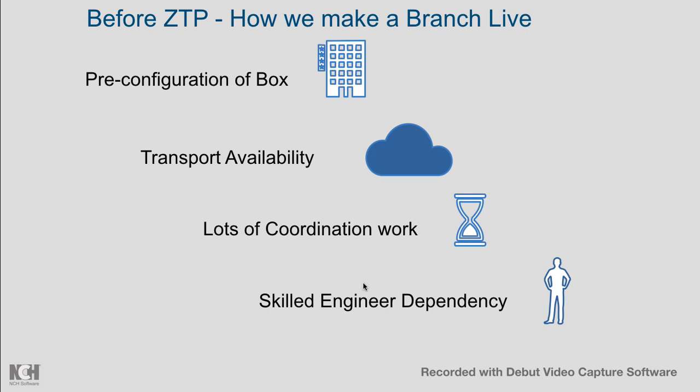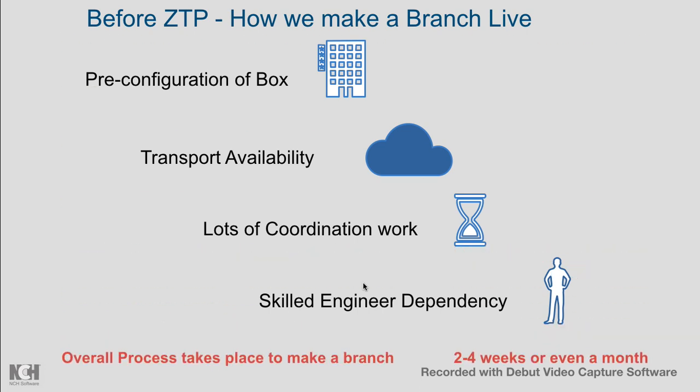The engineer at the branch needs to apply configuration as directed by the central NOC team — console into the device, apply bare minimum configuration for connectivity, and if any issues arise, troubleshoot on a call with the NOC. All these parameters make the overall process take two to four weeks or even a month to bring a branch live. For retail, banking, ATM, or any enterprise wanting a branch live in one or two days, this manual process simply won't work.